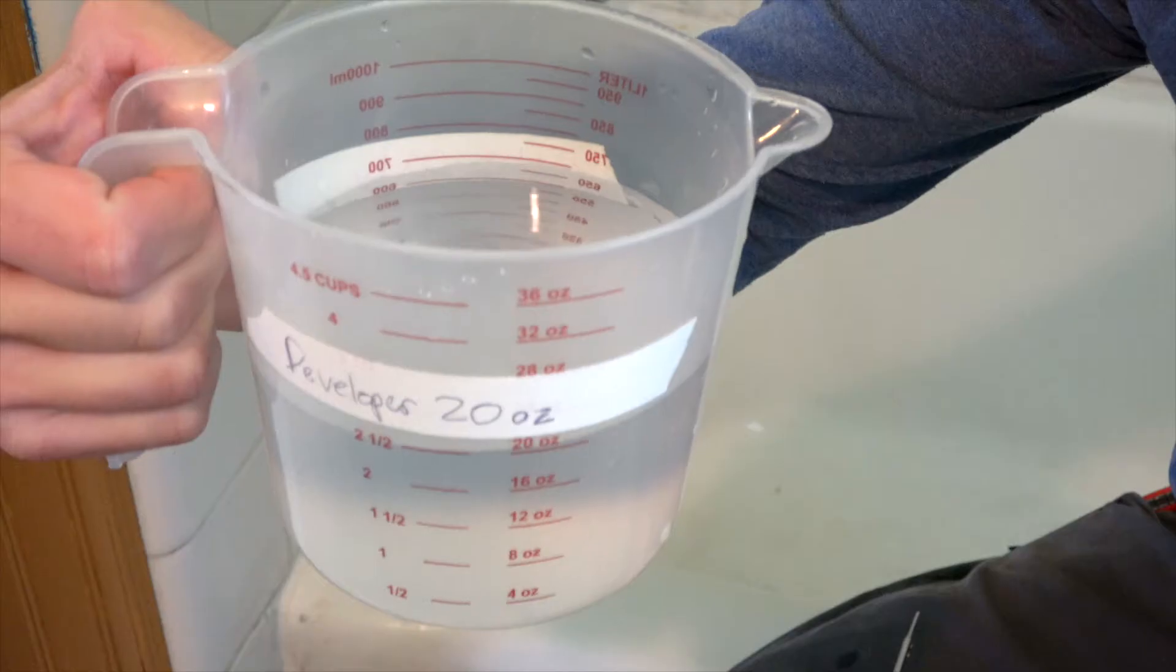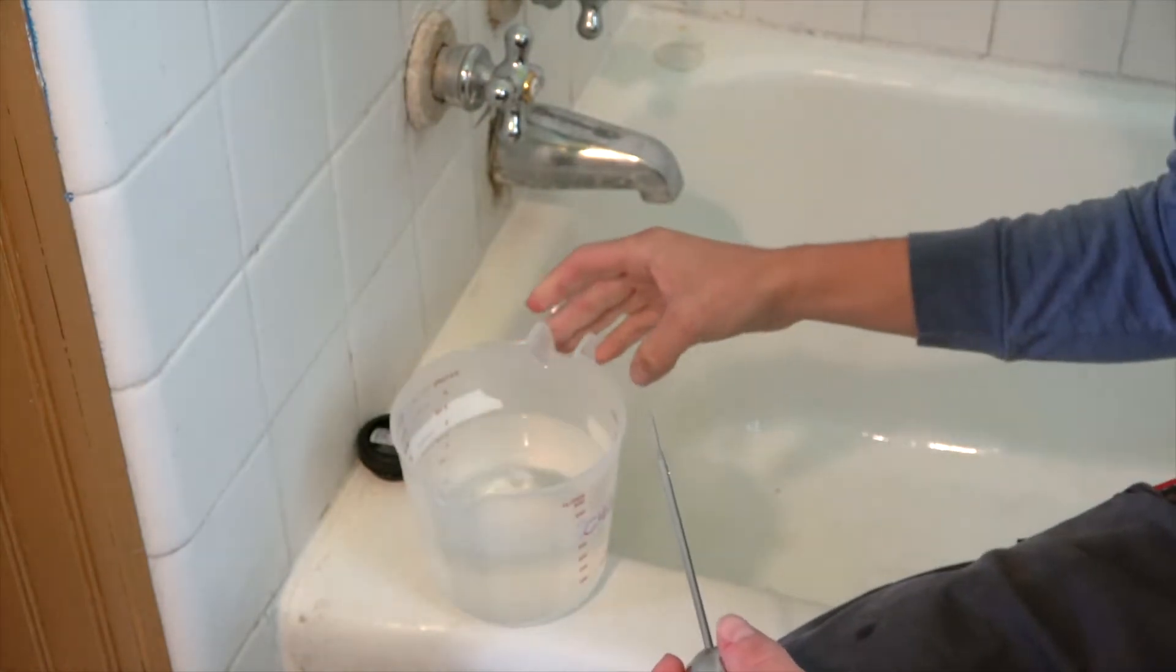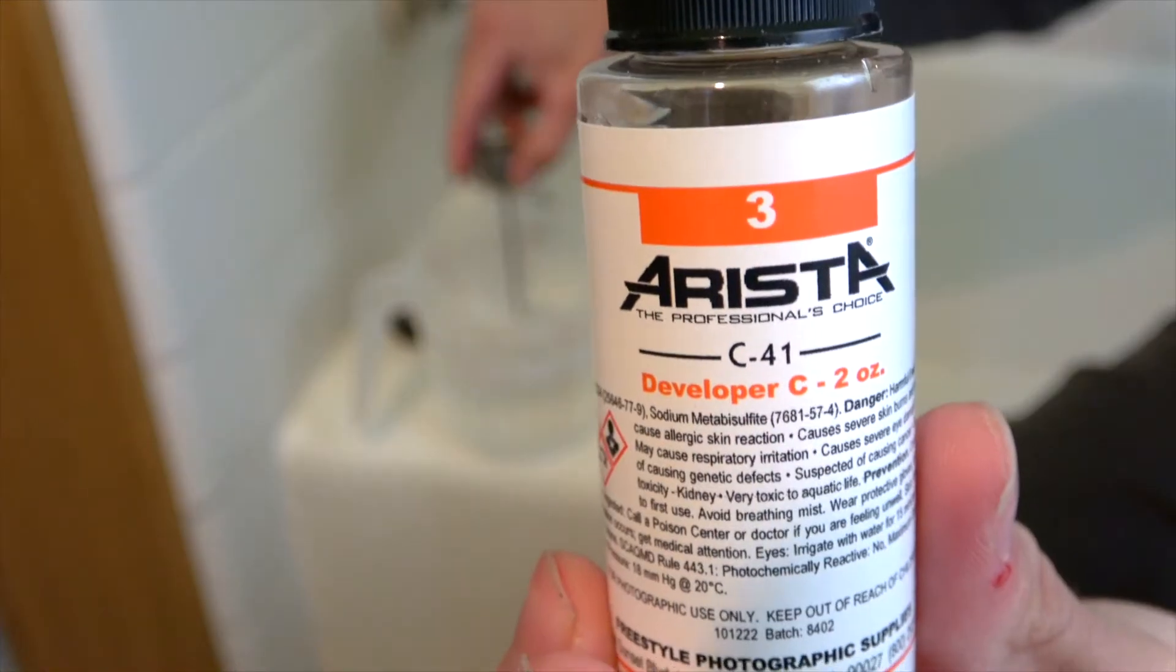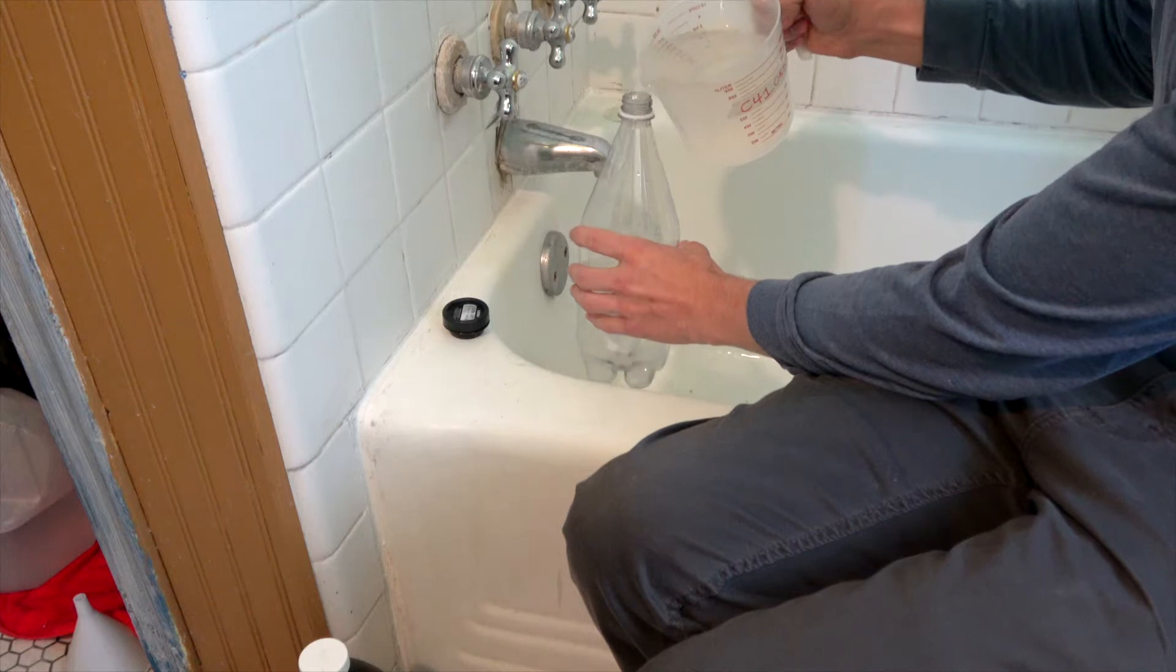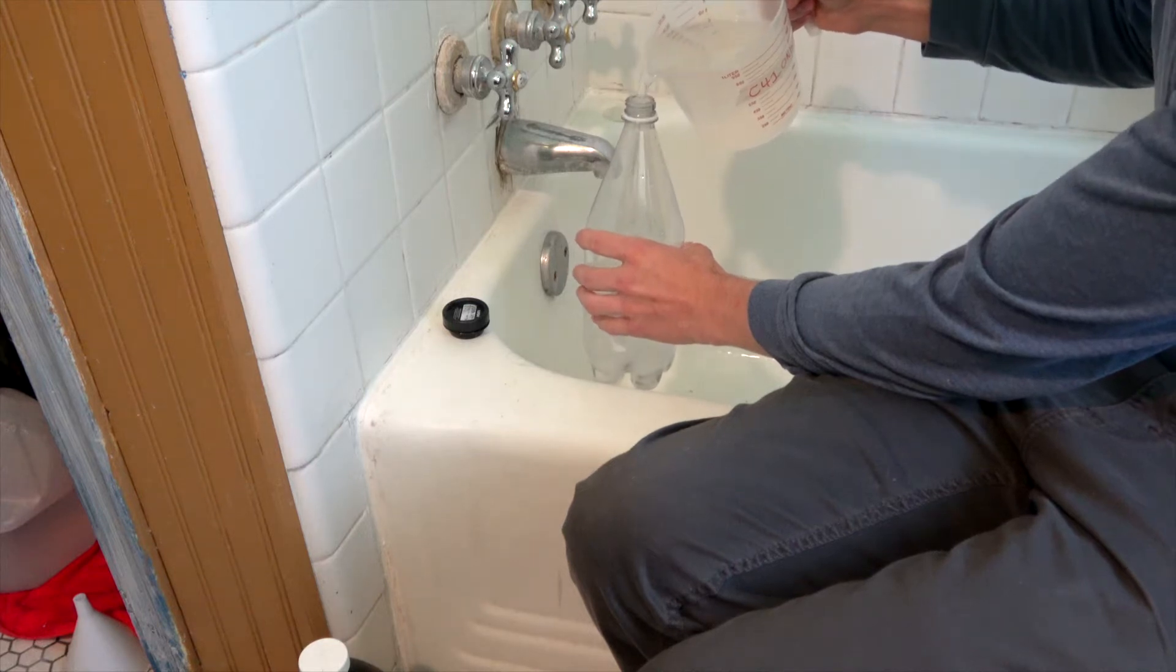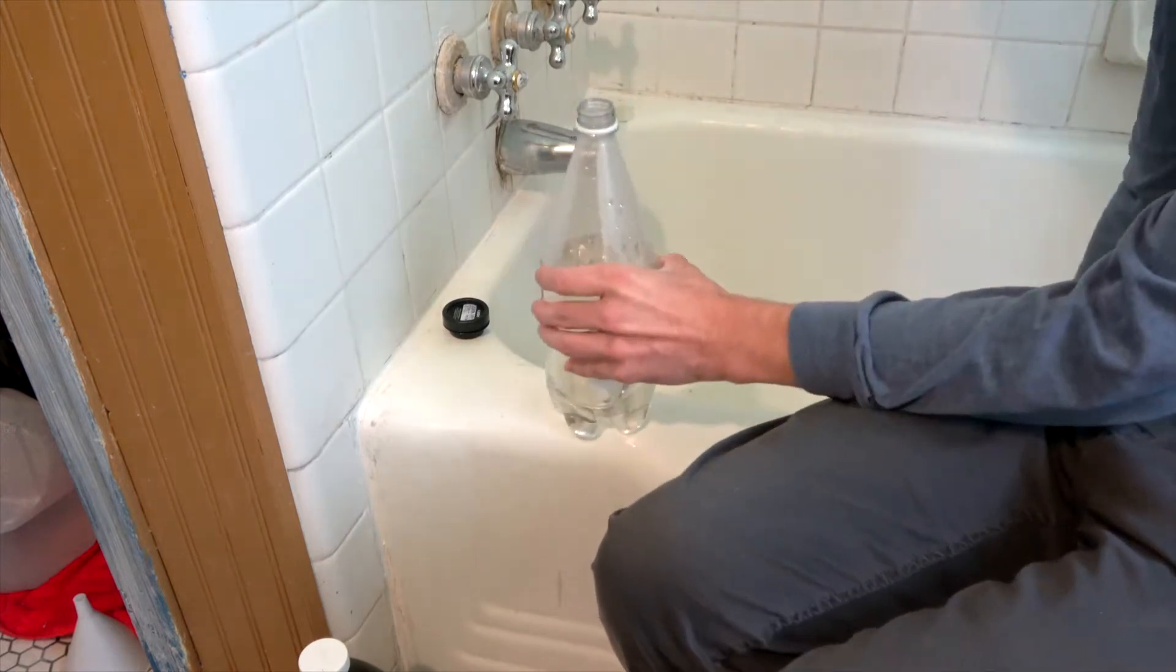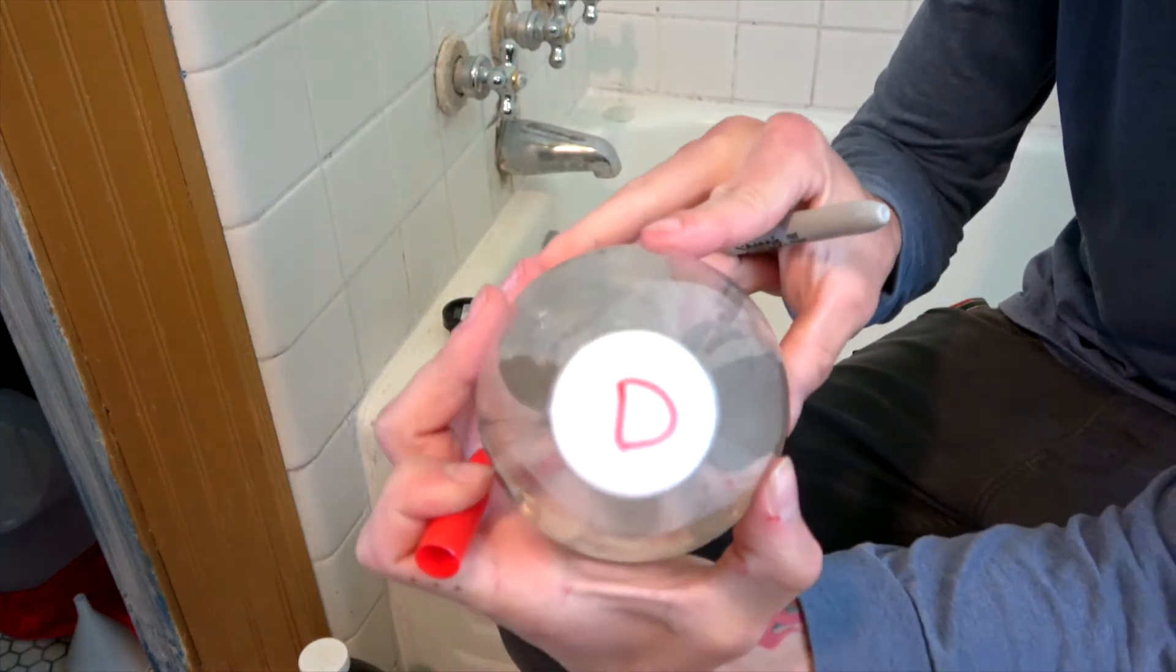It comes with the different steps, so there'll be a developer part A, part B, and part C. You want to be sure to follow the instructions when mixing these. Go ahead and pour this into your bottle that you're going to be keeping in, and be sure to mark the top of the bottle with developer so that you know that this is your developer.